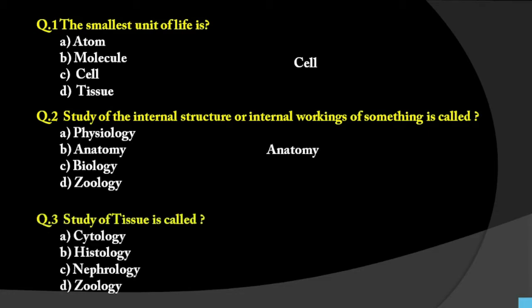Question number 3: Study of tissue is called what? Cytology means study of cells — cyto means cell, logy means study. Histology — histo means tissue, so study of tissue is called histology. Nephrology is the study of the renal system or kidney. Zoology is the study of animals. Since tissue study is asked, the answer is histology.